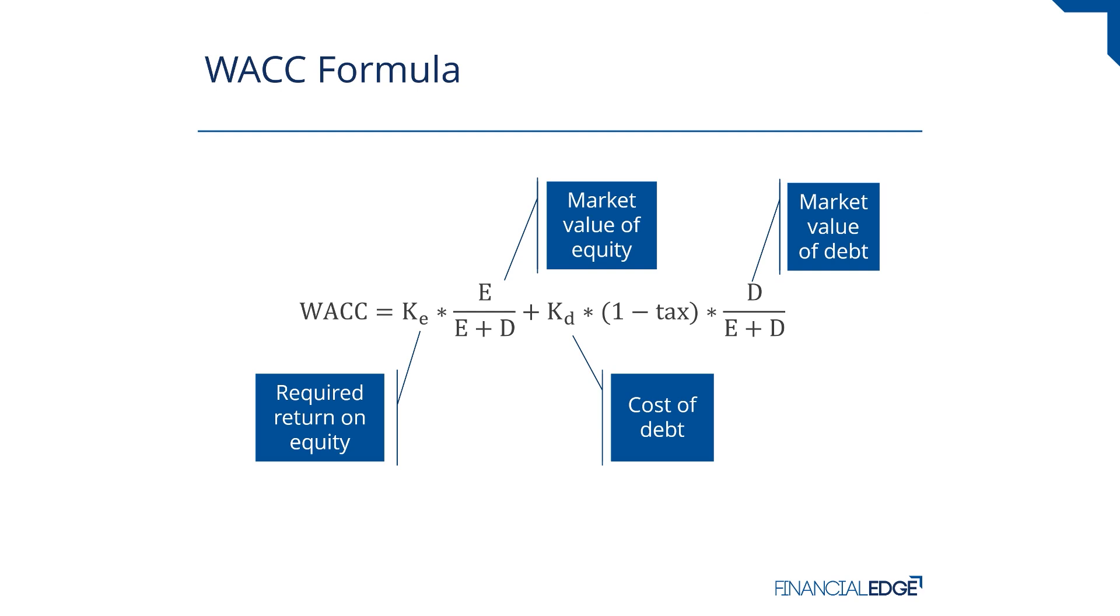So if they receive 5, and the tax rate is 20%, we actually save 1 of tax. So 5 times 1 minus the 20% would equal 4. The net cost to the company would be 4.